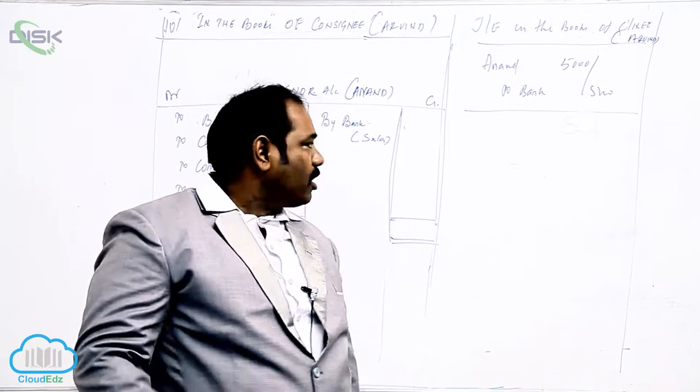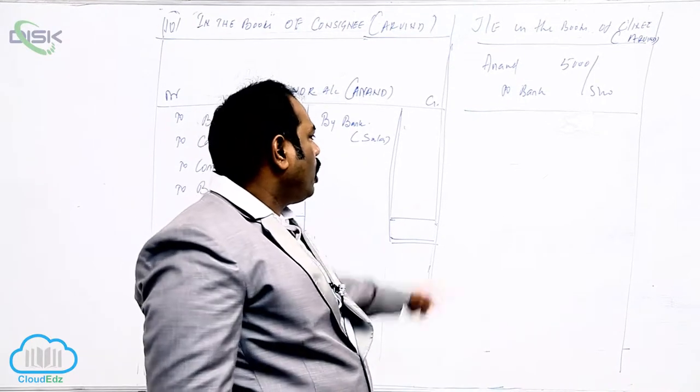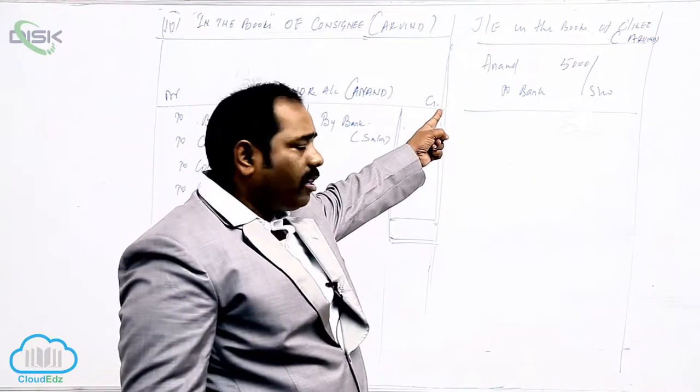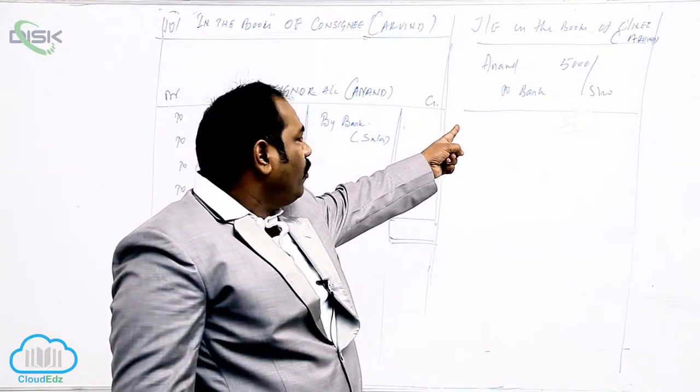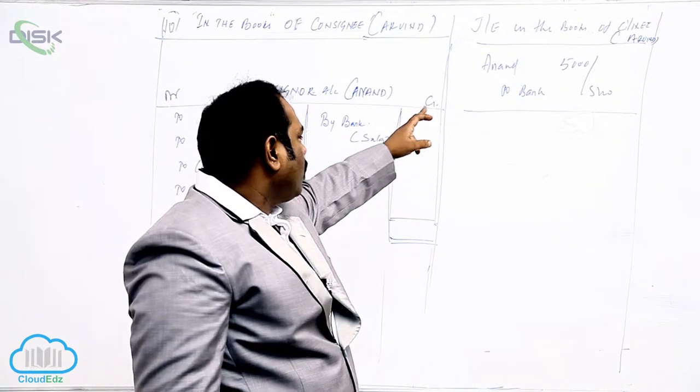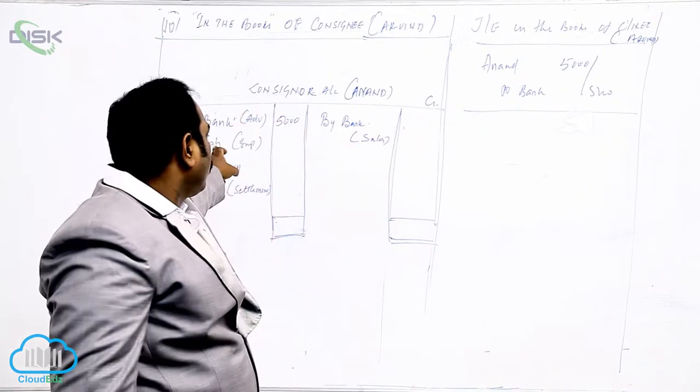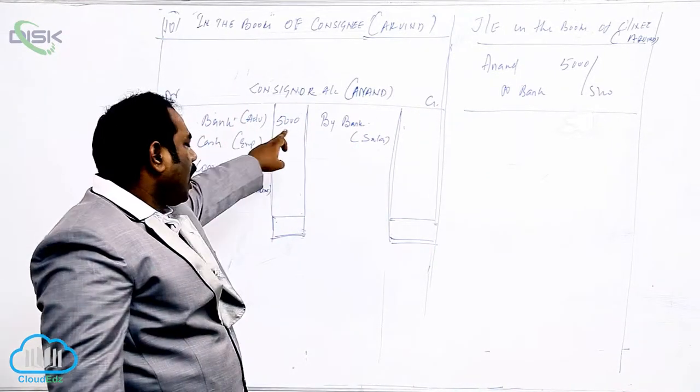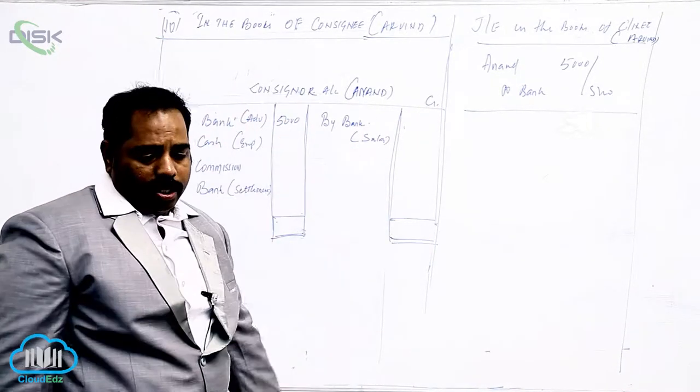We have given an advance of rupees — Python debit, the receiver Anand is the receiver. We are giving a check to the bank, so in Anand's account what we should write: 'To Bank' as advance.